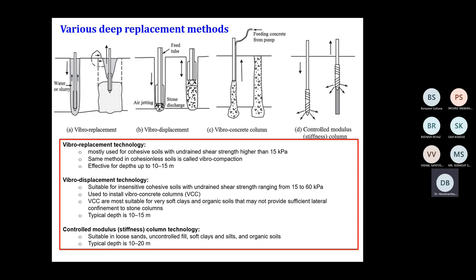You can easily understand the fundamental difference between vibro replacement and vibro displacement. Replacement means we are completely removing the soil — by making a borehole and filling the void with some other material, you are replacing one material with another. In vibro displacement we are not removing the material; rather, we allow it to displace in the lateral direction, and whatever void is created is filled with stiff material.